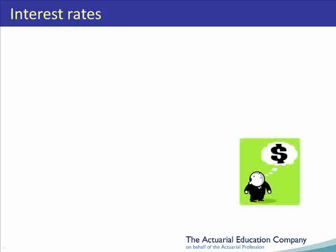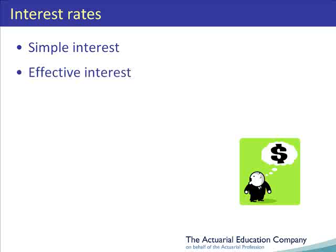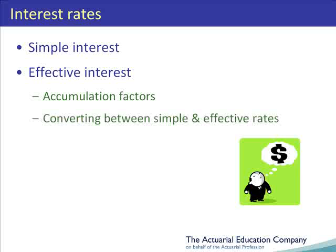In this unit we're going to be studying three types of interest rates. First up we'll be looking at simple interest. Next we'll be looking at effective or compound interest. For each of these two rates we'll be looking at how an investment accumulates as well as how we can convert between them. Finally we will very briefly introduce a third interest rate called the force of interest.